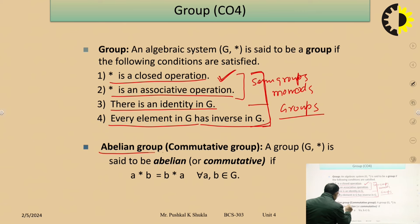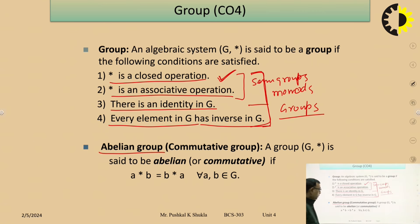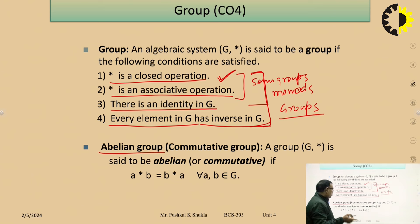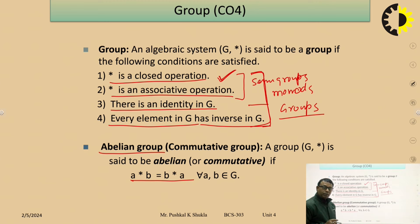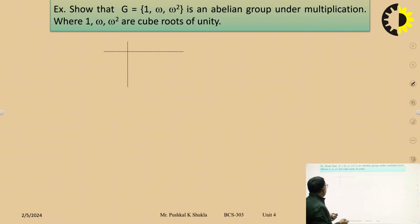One important topic is the abelian group, also called a commutative group. A group (G, star) is said to be abelian or commutative if the following condition is satisfied: a star b = b star a for every a, b in G. Let's see this by example.